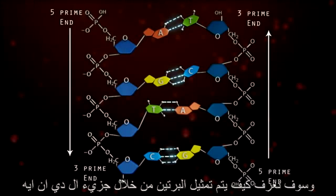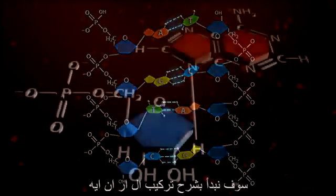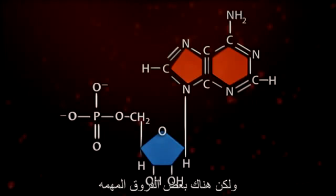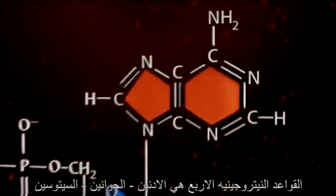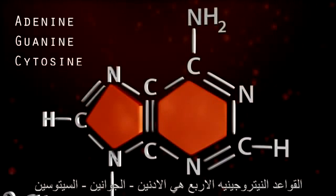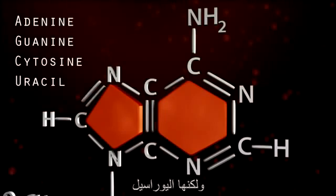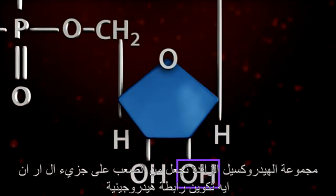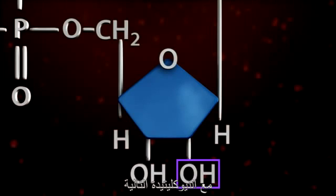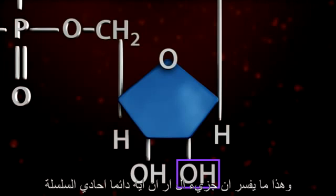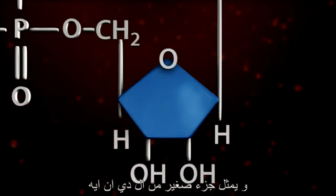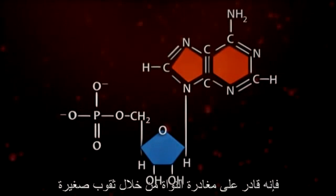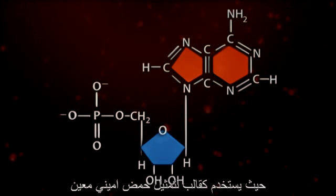Now that you understand the structure of DNA, we'll examine how DNA information is made into proteins. Let's begin by examining the structure of RNA. RNA nucleotides are very similar to DNA nucleotides; however, there are some very important differences. First, the four bases in RNA are adenine, guanine, cytosine, and uracil — not thymine. The second difference is found on the number two carbon: there is an extra hydroxyl group, which makes it difficult for RNA to form hydrogen bonds with adjacent nucleotides. That's why RNA is almost always single-stranded, and because it is single-stranded and represents only small sections of the DNA, RNA can leave the nucleus through small nuclear pores and travel into the cytoplasm, where it is used as a template to make proteins.